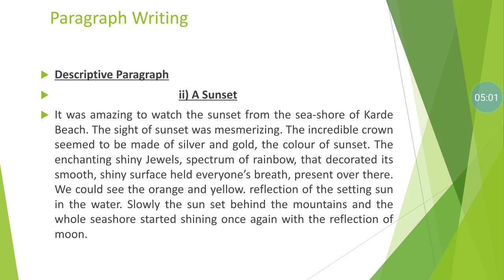This paragraph is also written in the same manner — start with a beginning line or title line, then descriptive lines, and a concluding line. It is amazing to watch the sunset from the seashore of Karate Beach. The sight of the sunset was mesmerizing; the incredible crown seemed to be made of silver and gold. The enchanting shiny jewel spectrum of a rainbow decorated its most shiny surface and held everyone breathless present there. We could see the orange and yellow reflection of the setting sun in the water. Slowly, the sun set behind the mountain and the whole seashore started shining once again, reflecting the moon. These are the descriptive paragraph.